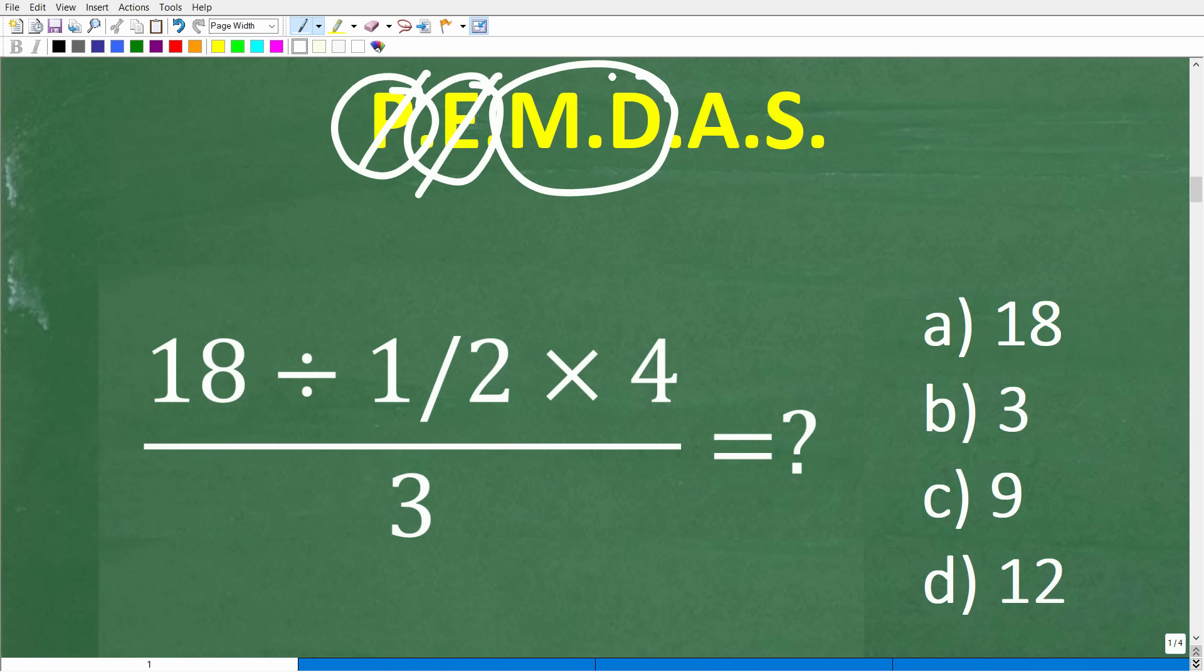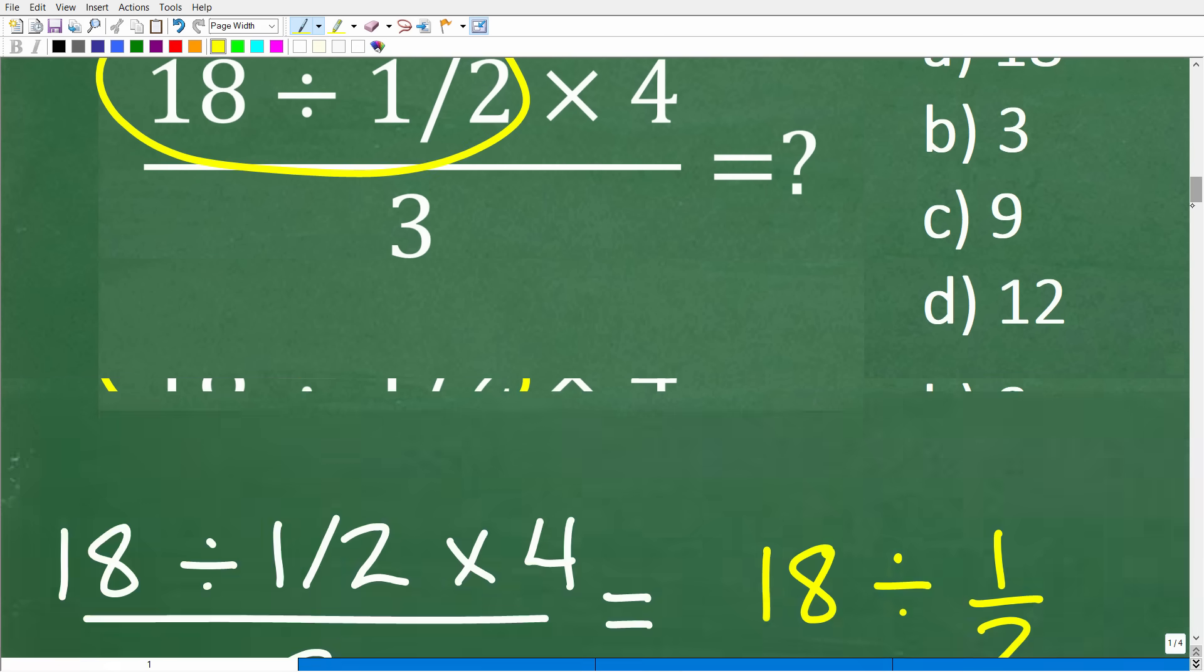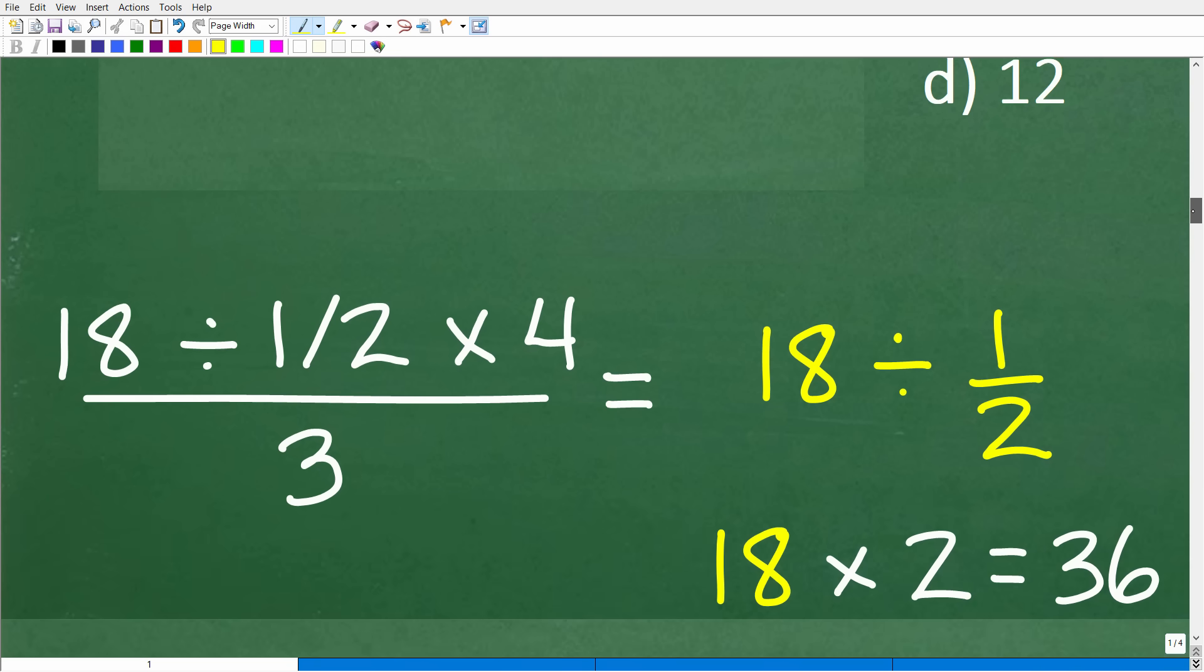So is there any multiplication and division? Yes, there is, right? So we have division right here. Okay, so that's our D. And we have multiplication right here. So what do we see first from left to right? Well, we see division, right? So we have to do this first. Okay, so 18 divided by 1/2. Obviously, we need to know a thing or two about fractions. So let's go ahead and get into the math right now.